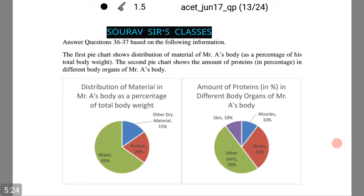Next we have a pie chart. The first pie chart shows distribution of material for Mr. A's body. The second pie chart shows the amount of proteins in different body organs of Mr. A's body. Please notice the pie chart as we are going to do the further questions.